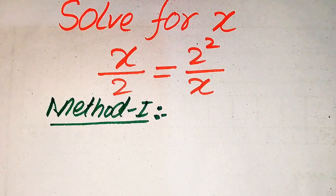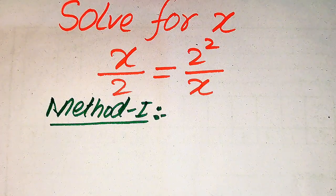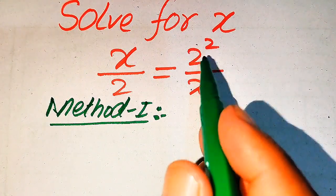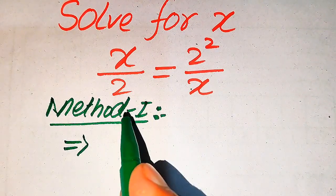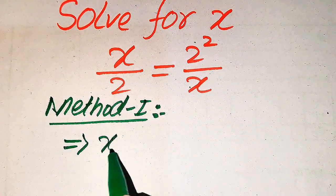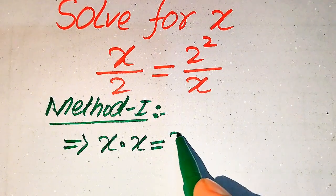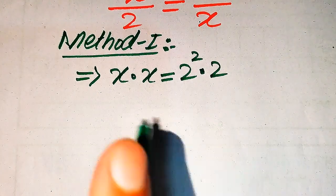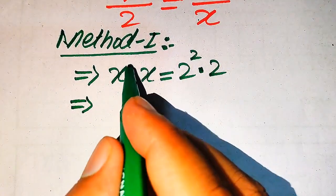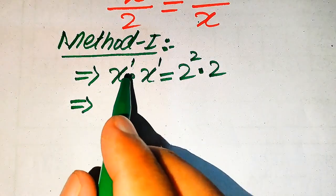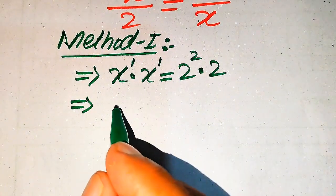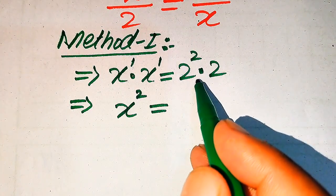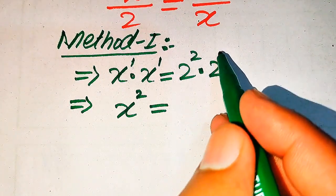In the first method, I can just cross multiply the terms. You see here this x is multiplied by this x, and this 2 is multiplied by this 2 squared. So after cross multiplication it will be written as x multiplied by x equals 2 squared multiplied by 2. Now the bases of these two terms on the left are the same, so we add the exponents — both exponents are 1 — giving us x squared.